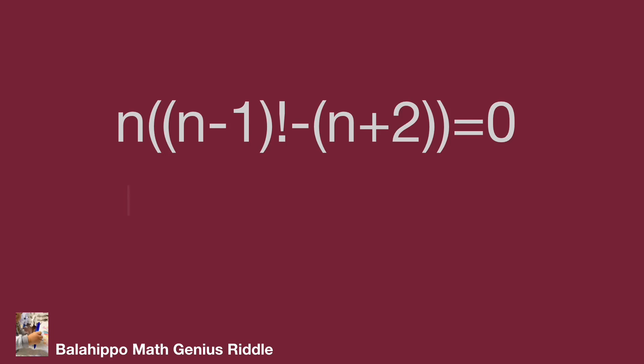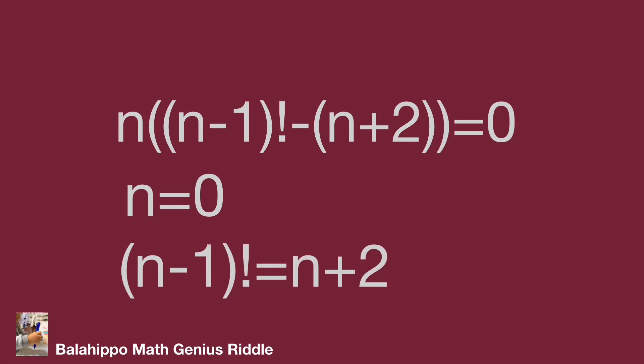Then either n equals 0, or quantity (n minus 1) factorial equals n plus 2. While n equals 0, check the question: 0 factorial equals 1, but n squared plus 2n equals 0. Since these are not equal, n equals 0 is not the answer.